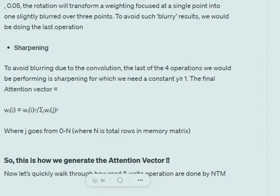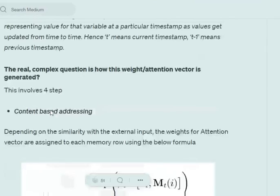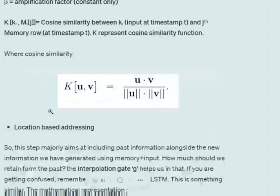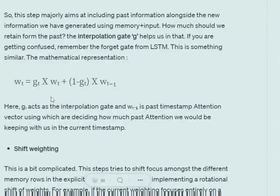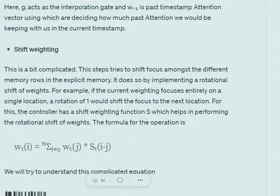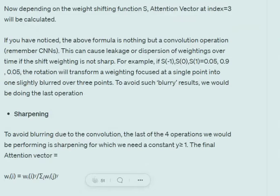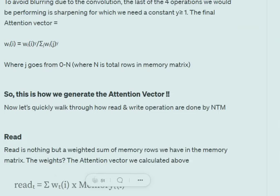To recap, generating the weight vector involves four steps: (1) content-based addressing, finding cosine similarity between each memory row and the input; (2) location-based addressing, using an interpolation gate g to determine how much past information to retain; (3) shift weighting, shifting focus across the whole matrix using a convolution-like shift; and (4) sharpening, to counteract the blurring effect of convolution using the sharpening formula.